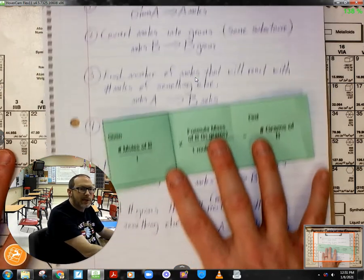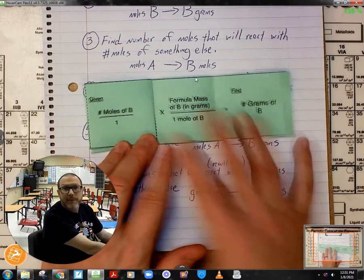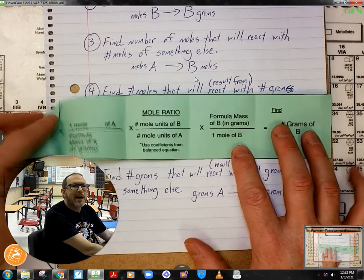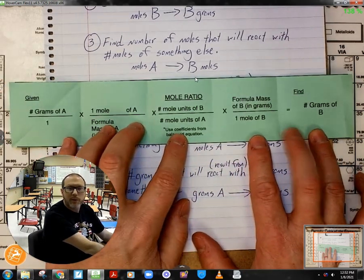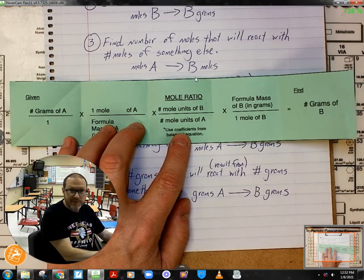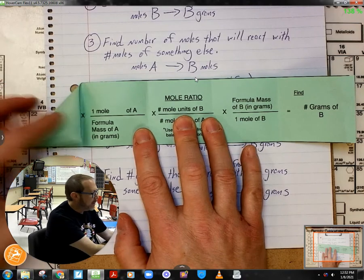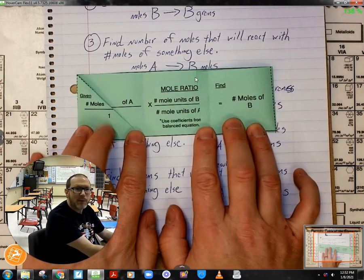Alright, let's take it up a notch. What if I'm given a balanced equation or if I have an equation I can balance, and I want to find how many moles of one substance will react with moles of another substance or yield moles of that other substance. And so I'm going to be starting where I'm given moles of substance A. I'm going to fold this to where I find moles of substance B.